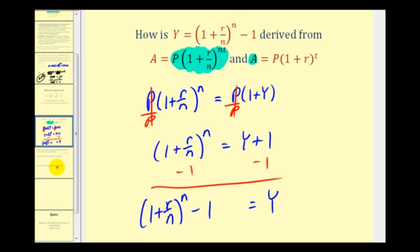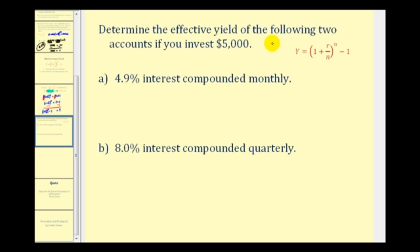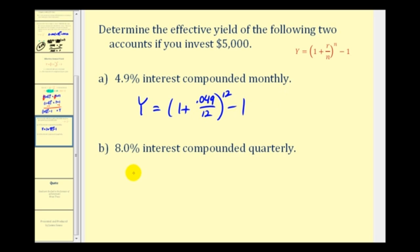Let's look at two more examples — determine the effective annual yield for two accounts investing $5,000. Note that to determine the effective annual rate, it's not required that we know the amount of the investment. For the first account: Y equals (1 + .049/12)^12 minus 1, compounded monthly so N is 12. For the second account: Y equals (1 + .08/4)^4 minus 1, compounded quarterly so N is 4.